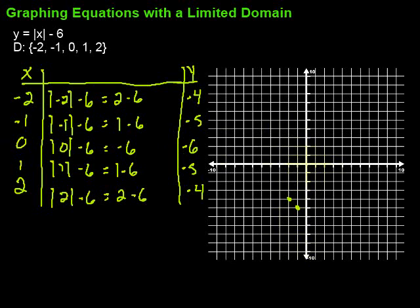Next one, zero negative 6. So zero left or right, down 6, puts me right there. Then we go to 1, negative 5. So over 1, down 5, right there. And finally 2, negative 4. Right there we are.